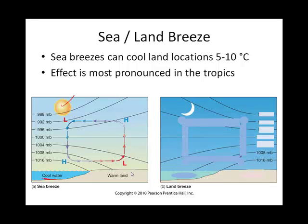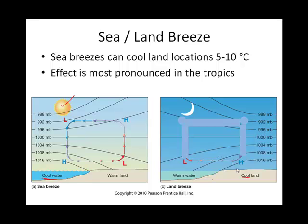At nighttime we have a different scenario. The land cools more quickly than the water, so the water is relatively warm. The land, being cool, tends to have a high pressure at the surface, and a low pressure out over the water or lake. At the Earth's surface we have this outgoing land breeze, moving from high to low pressure. The air over the water creates a high pressure aloft, and aloft over the land is low pressure — so at upper elevations we actually have a sea breeze, but at lower elevations we have the land breeze.